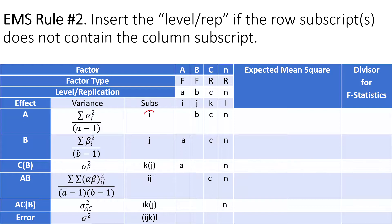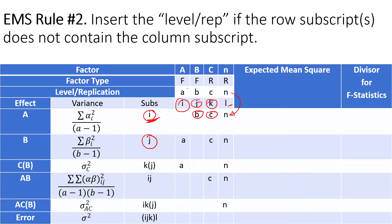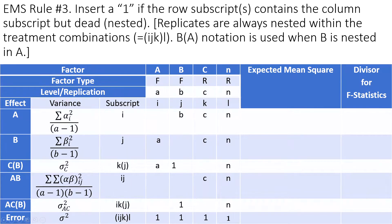You set up this table, and then apply the next rule: when the row subscript does not contain the column subscript, you type that level in that cell. For example, if row subscript i does not contain k, we type c (the levels of C) in that cell. If i does not contain l, we type n. Similarly, if the row subscript for Z does not contain i, we bring in a; if it does not contain k, we bring in c; if it does not contain l, we bring in n. Fill the rest of the cells the same way.